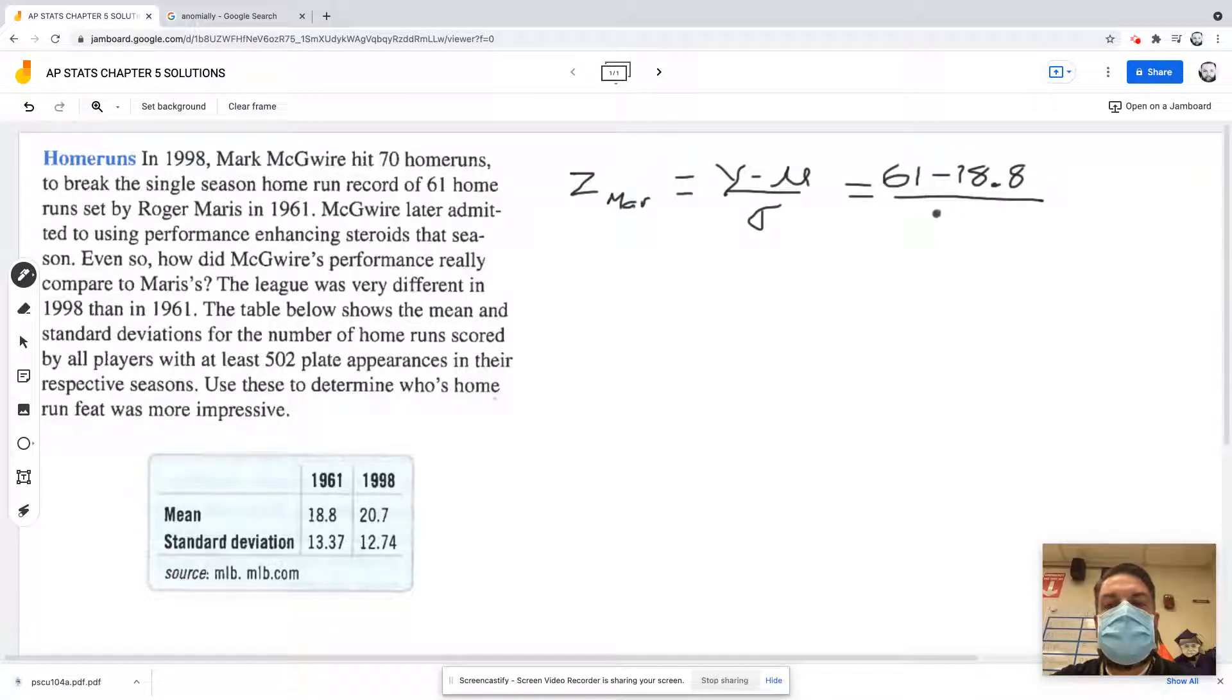All over the standard deviation which is 13.37. If I plug that into our calculator, the z-score is about 3.16.